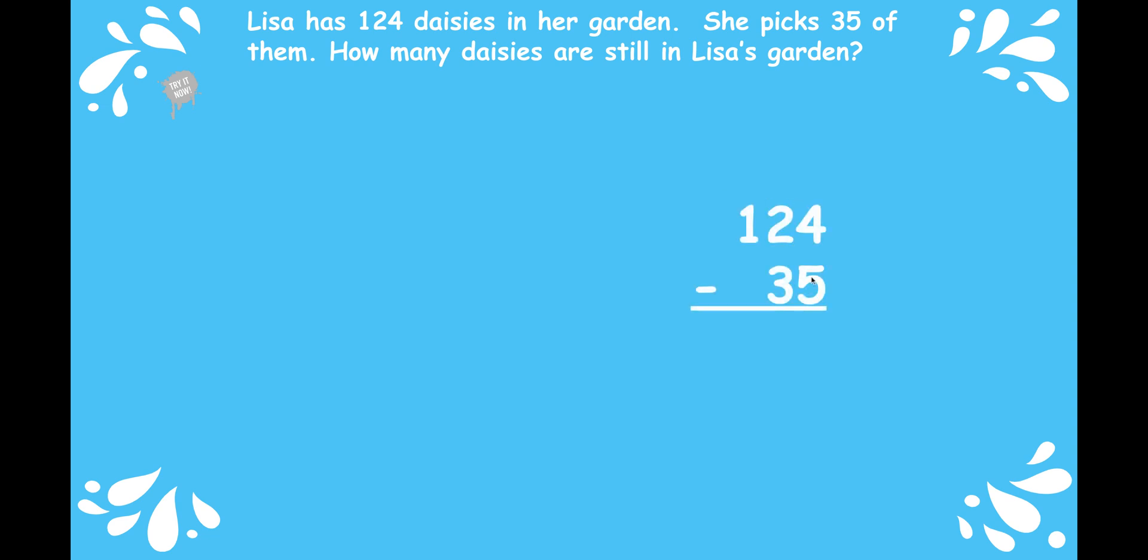And notice the place values are lined up. 124 minus 35 will give me how many daisies are left in Lisa's garden. I'm going to model the total because when we subtract, we model the total and we pull out part and that will give us the other part.